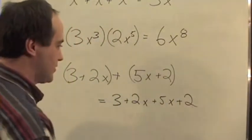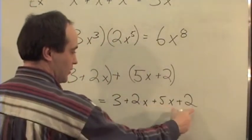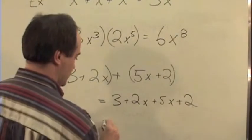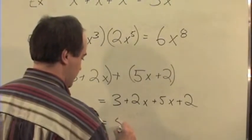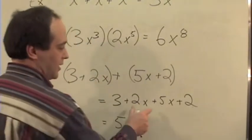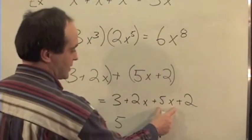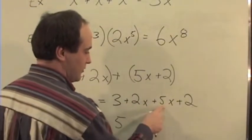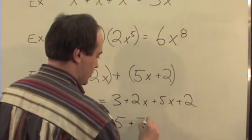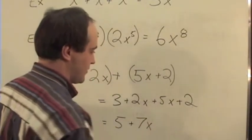So this is the same thing as 3 plus 2x plus 5x plus 2, and we can see we can now, we got two things, well let's just take the 3 plus 2 first, two constants, we'll deal with them, are 5, and we have 2x plus 5x, so that we add the constant in front to give us plus 7x.